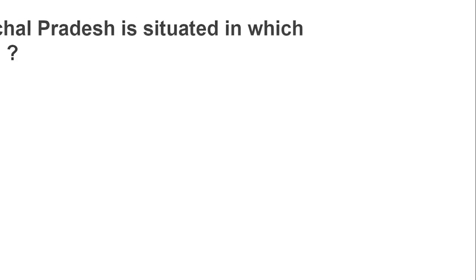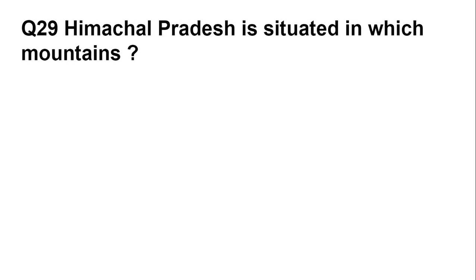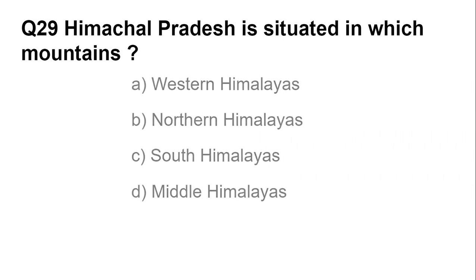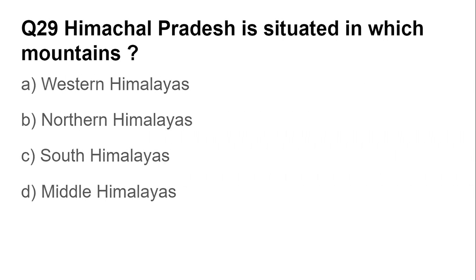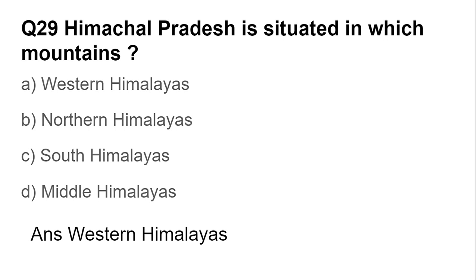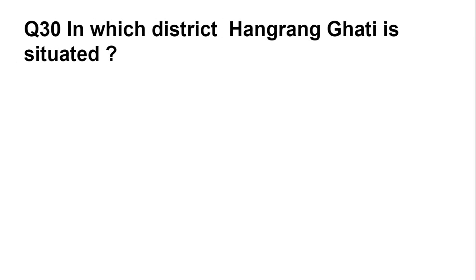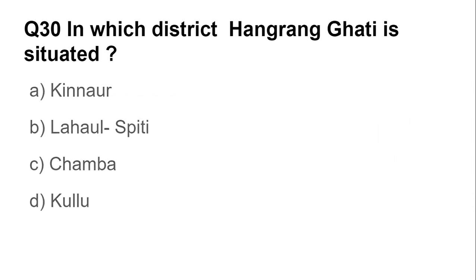Question number twenty-nine: Himachal Pradesh is situated in which mountains? Options are: Western Himalayas, Northern Himalayas, South Himalayas, and Middle Himalayas. The answer is Western Himalayas — Himachal Pradesh is situated in the Western Himalayas. Question number thirty: In which district is Hungrang Ghati situated? Options are: Kinnaur, Lahaul-Spiti, Chamba, and Kullu. The answer is Kinnaur.